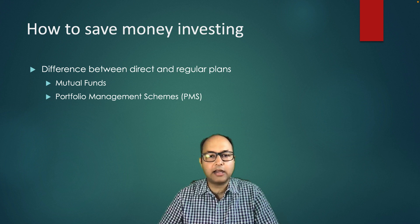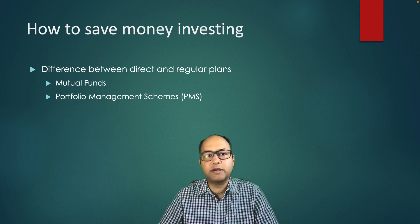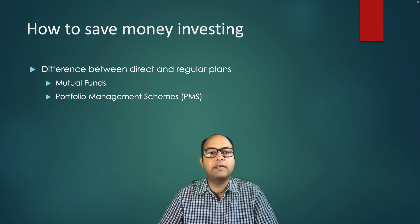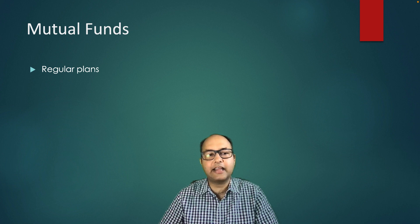The third category, which is Alternate Investment Funds (AIFs), is still a brokerage-linked product. When you invest in AIFs, those are always in regular format — meaning a brokerage is paid out. Regular plans in mutual funds are those that have been in existence from the start.